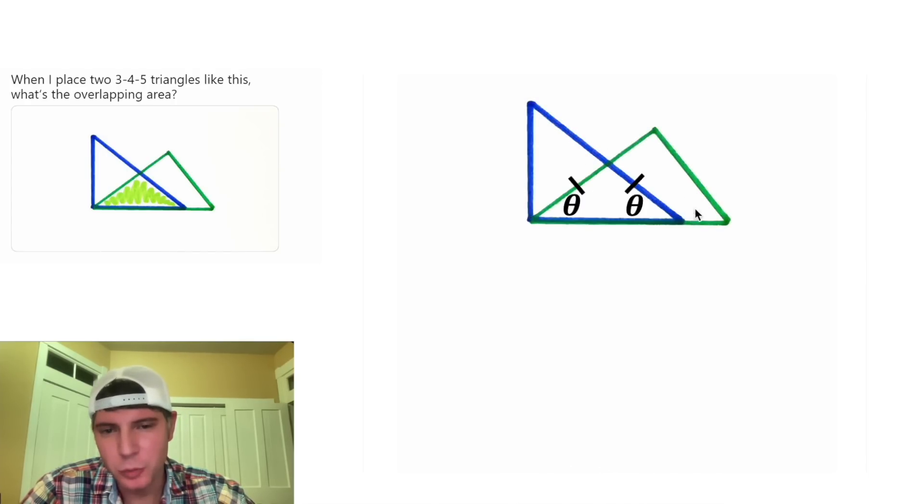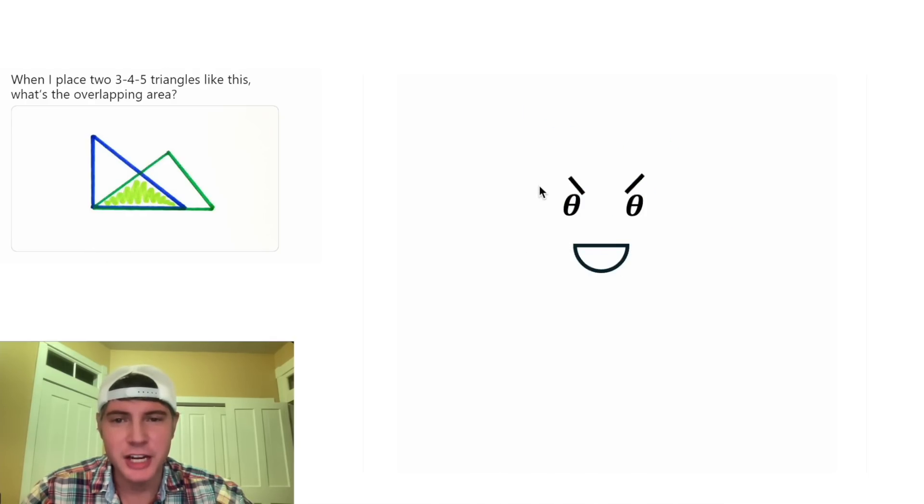I thought about it a little bit, and I'm not sure what to do with this isosceles triangle. So I ended up constructing a semicircle here, getting rid of our triangles, and bringing this shading down.